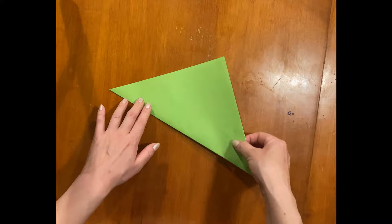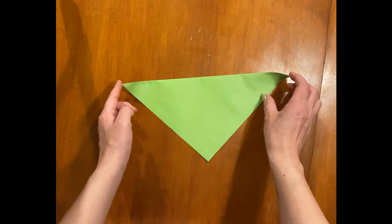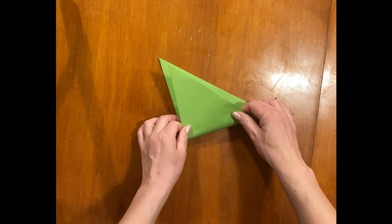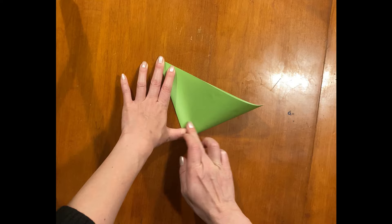Second step is to meet these two bigger side edges, pointed to make another triangle. See, it meets together.